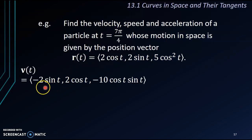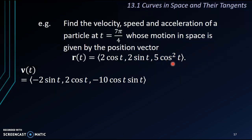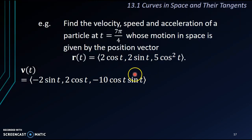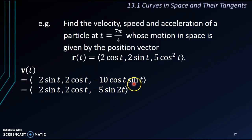So, our velocity vector v will have components: negative 2sin t (from differentiating 2cos t), then the j component 2cos t (from differentiating 2sin t), and for the k component, applying the chain rule, we get negative 10cos t sin t. We simplify this to negative 5sin 2t using the double angle formula, which will make differentiating for acceleration easier later.